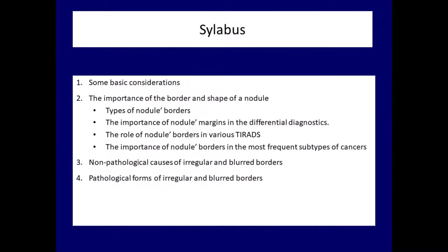Let's see the topics which will be discussed. First, I give an overview of some important considerations. Thereafter, I present the various forms of non-regular margins and try to place the importance of nodule borders in thyroid risk stratification and in differential diagnostics of nodular goiter. I will shortly present the importance of this characteristic in different subtypes of thyroid carcinomas.